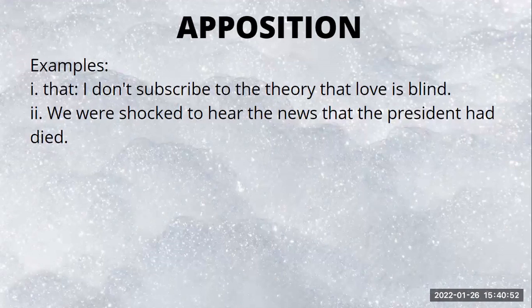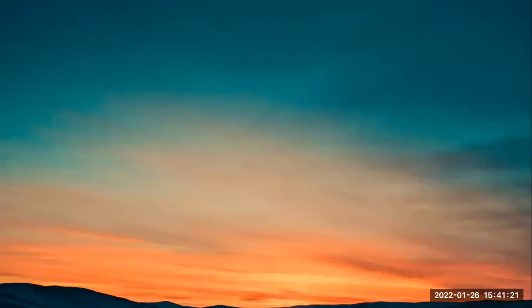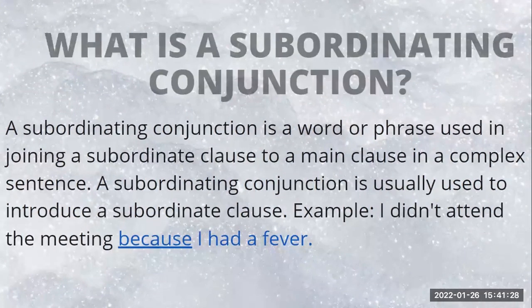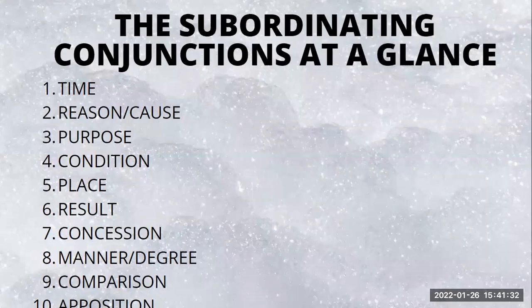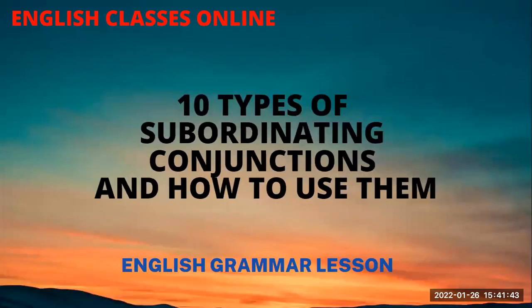So we use the subordinating conjunction of apposition to introduce the explaining idea: 'We were shocked to hear the news that the president had died.' Those are all the various subordinating conjunctions. We have looked at 10 types: time, reason or cause, purpose, condition, place, result, concession, manner or degree, comparison, and opposition. I hope you learned them and enjoyed today's video.